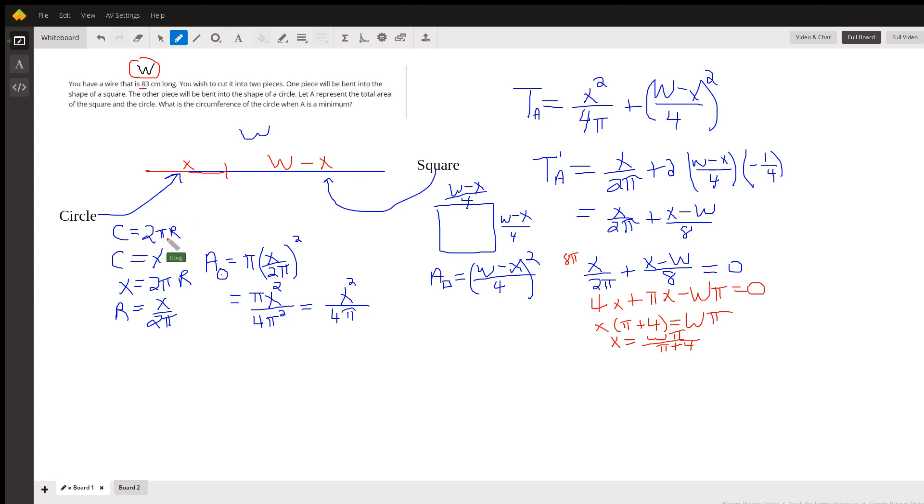So we know that the circumference is 2πr, and we know that we're taking this length x and bending it into the shape of a circle. So x is also the circumference. So that means these two expressions have to be equal. And that means x equals 2πr. So the radius is x divided by 2π.